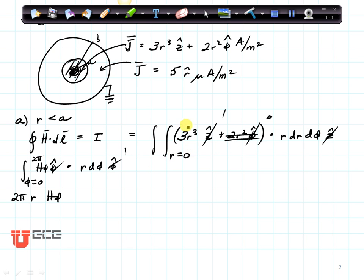My radius is going to go from 0 to r, where r is less than a, and phi is going to go from 0 to 2π. So when I do this integral, I'm going to get 3, r to the fifth over 5, from 0 to r.